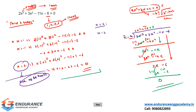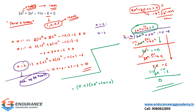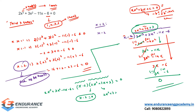So from the long division, we already have one root x = 2, which gives the factor (x - 2). The quotient is 2x² + 7x + 3. This means we have reduced our third-degree polynomial into a first-degree factor (x - 2) and a second-degree factor (2x² + 7x + 3), both equal to zero. From (x - 2) = 0, we get x = 2.